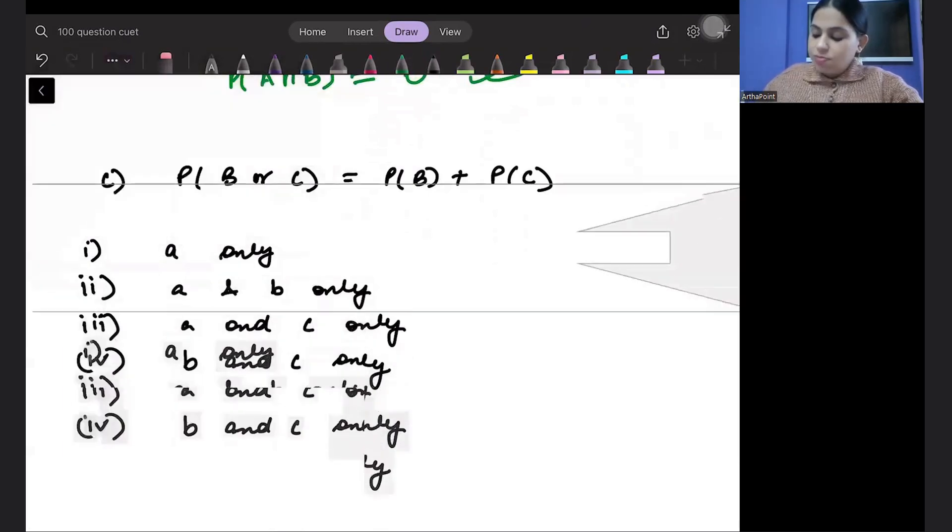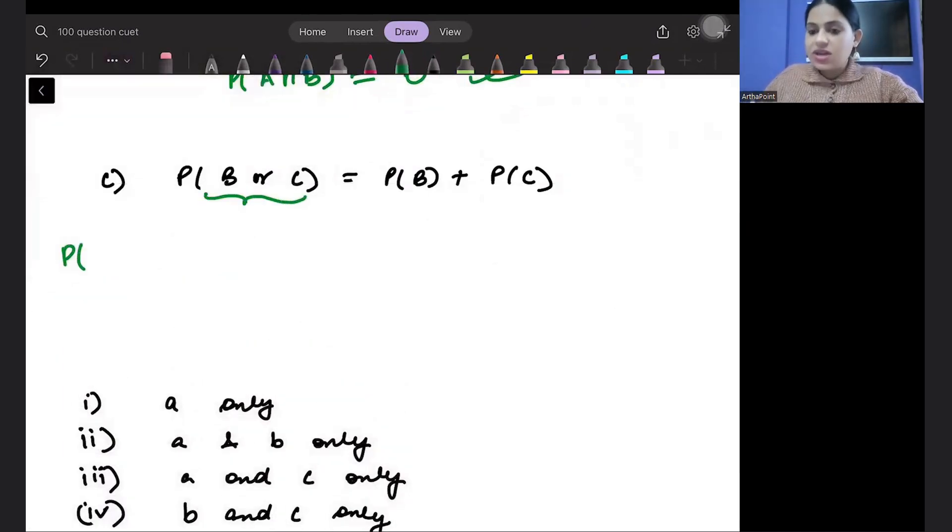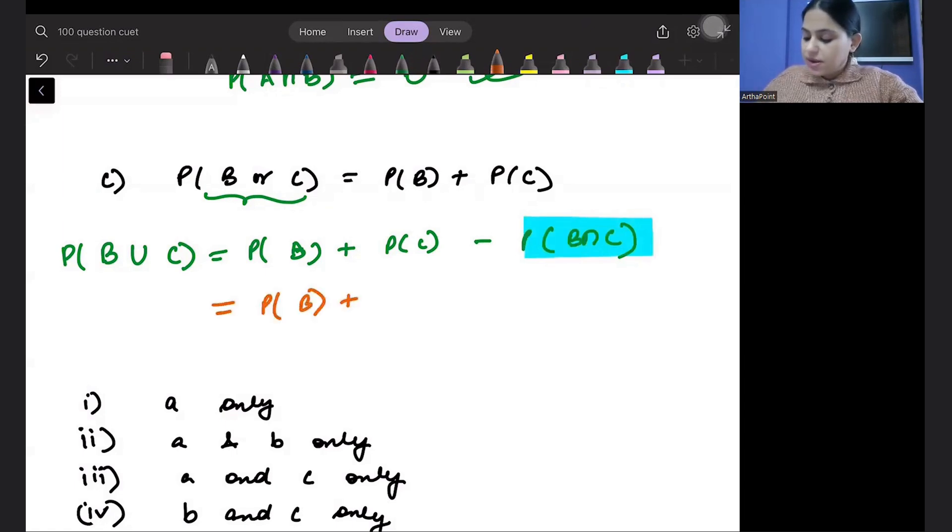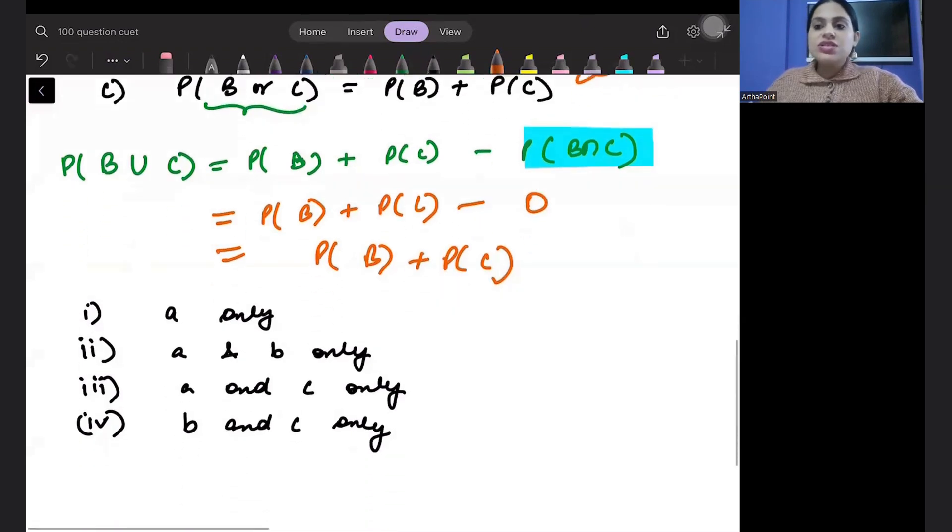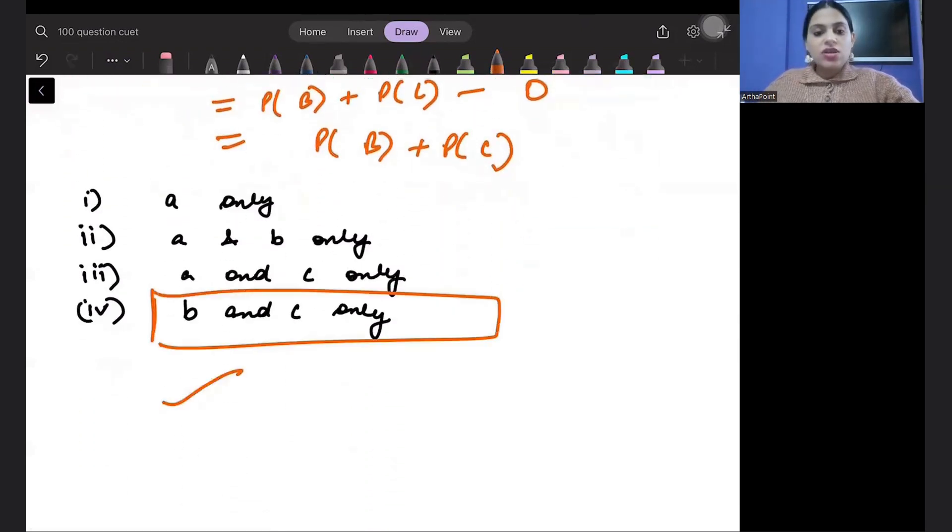Probability of B or C means B union C. So the formula is B plus C minus B intersection C. But they are mutually exclusive, they don't have anything in common. So B intersection C will be zero. So this becomes B plus C minus zero, which is B plus C. This is correct. So the statements B and C are actually correct. Both the statements are true.